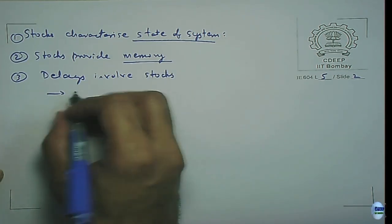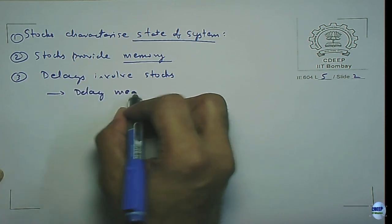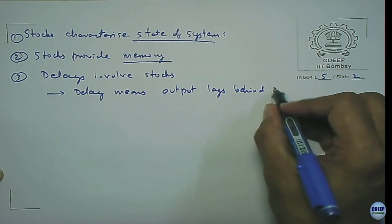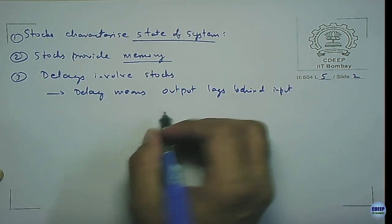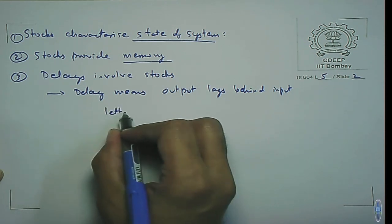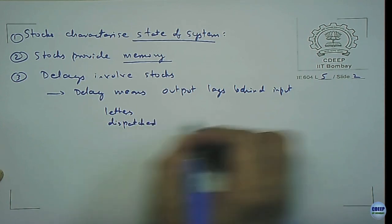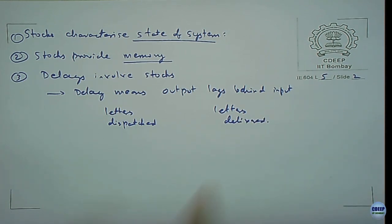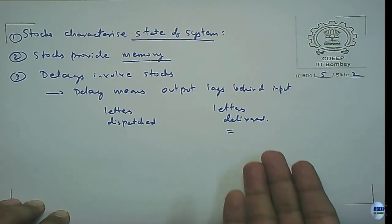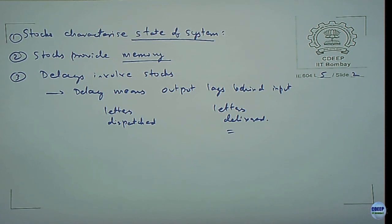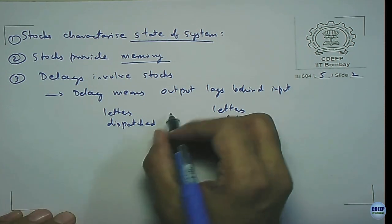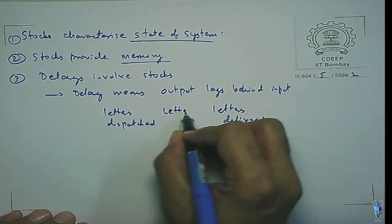Delay means output lags. For example, if you have letters dispatched and letters delivered, the delivered letters will typically be whatever was dispatched some periods earlier — whatever is dispatched today will be delivered say one week later. So one week's worth of letters has to be there in the pipeline, and we can have a stock called 'letters in pipeline.'